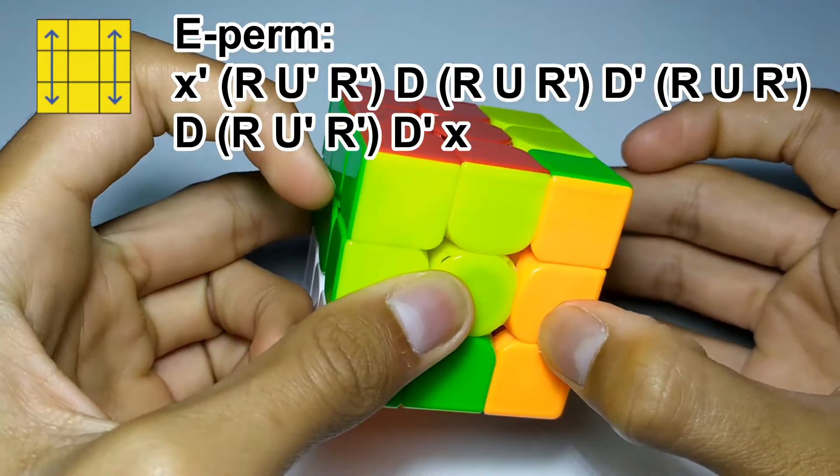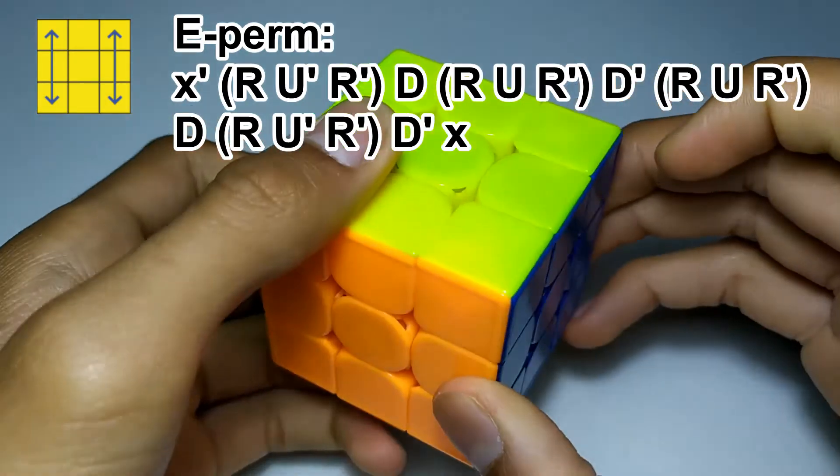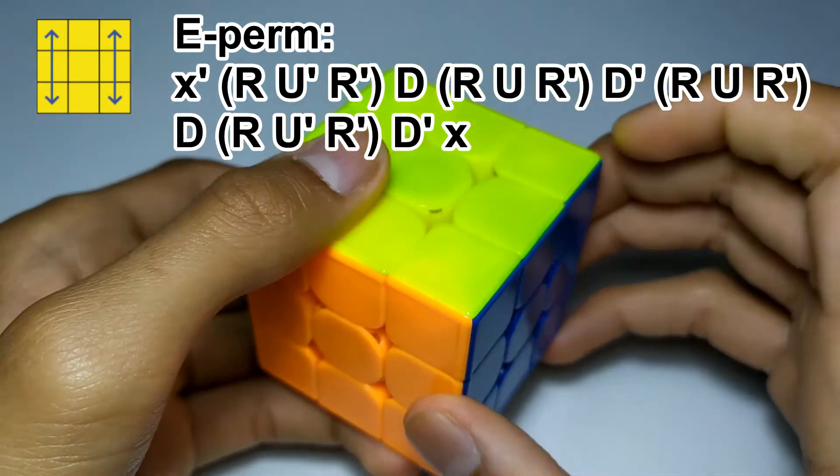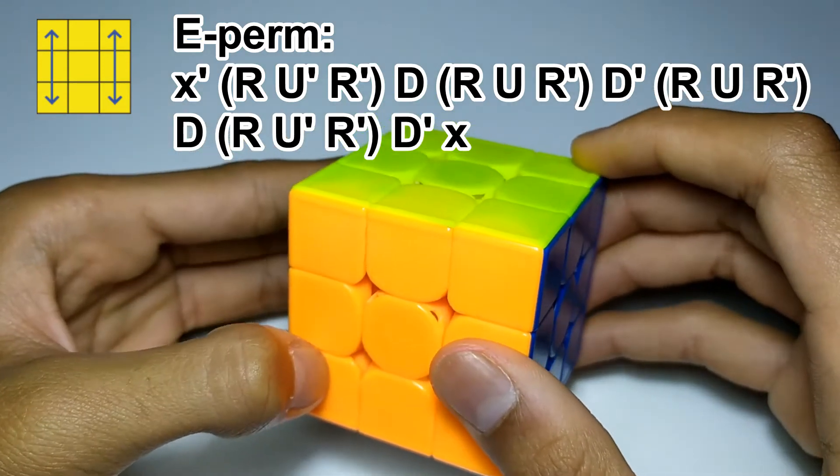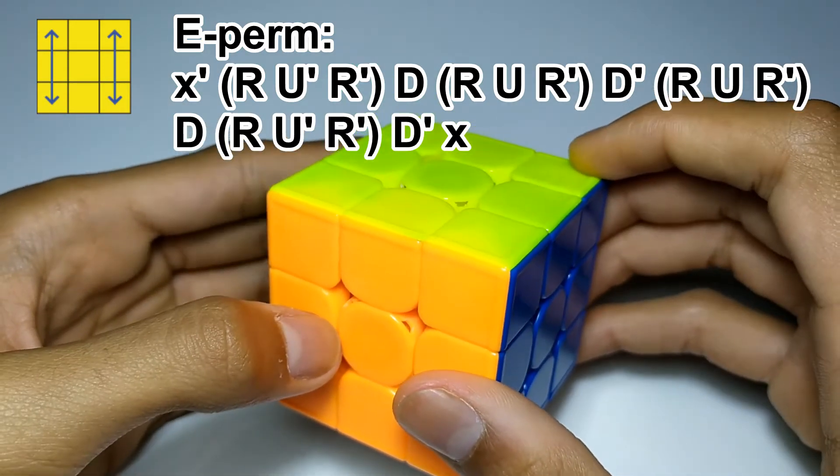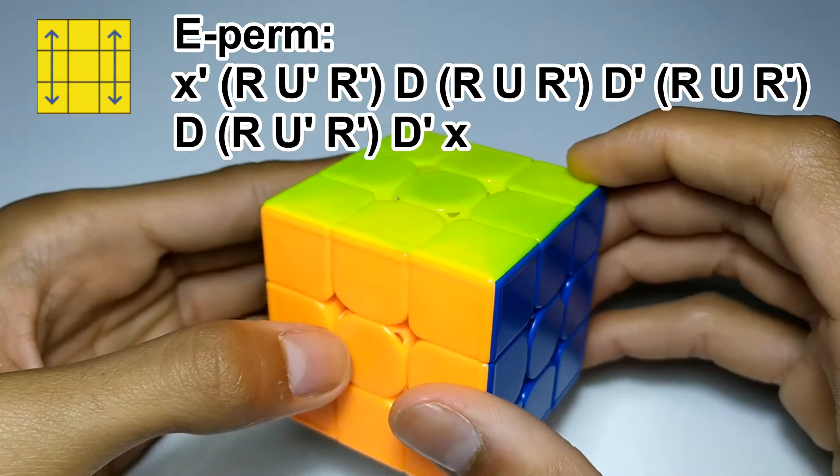This is one of the fastest PLL algorithms to execute but when you combine it with the recognition time it's actually quite slow. So make sure you can recognize the algorithm as fast as possible.